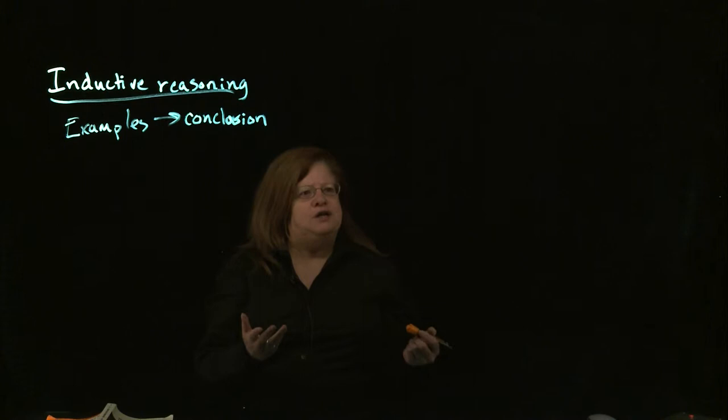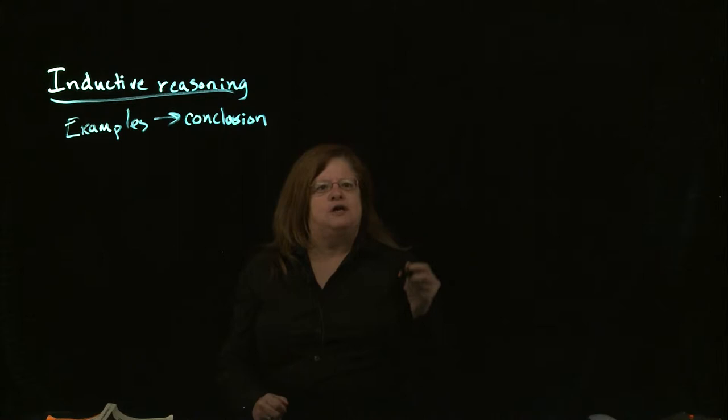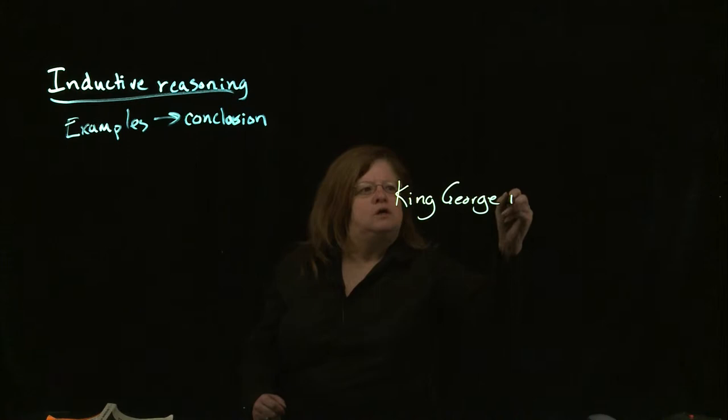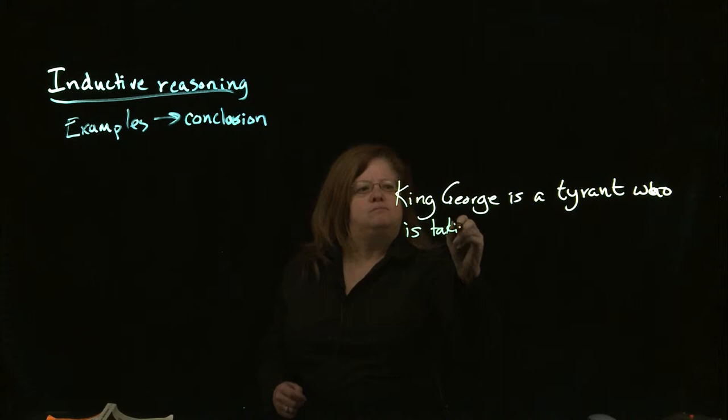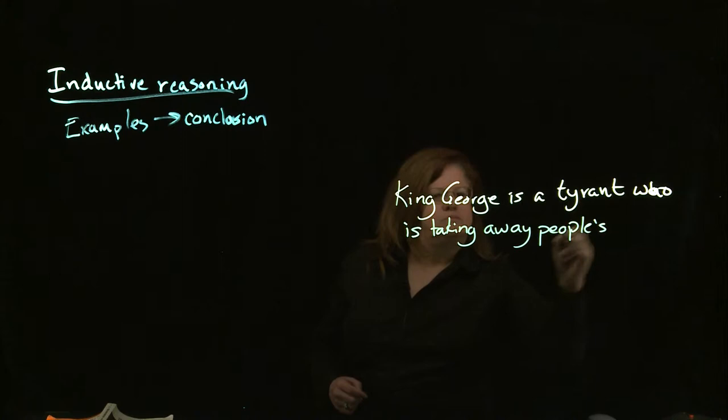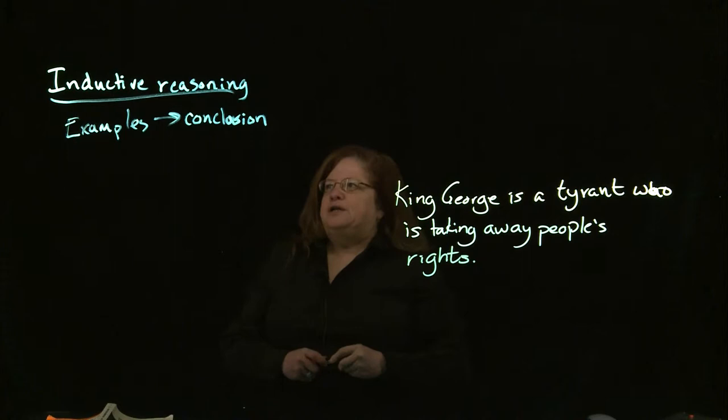So what we want to do is figure out what all these wonderful examples go to prove — what is his main point reached after all those examples. Basically, if we translate it into modern English, we're looking at something like: King George is a tyrant who is taking away people's rights. That is our conclusion reached from the inductive reasoning.